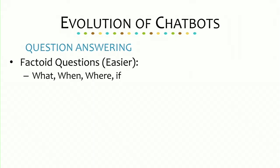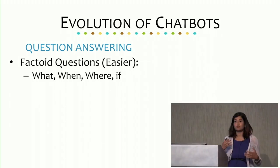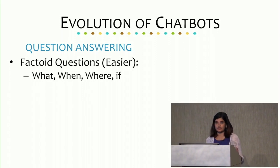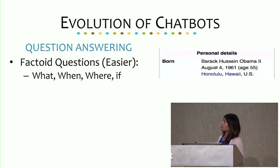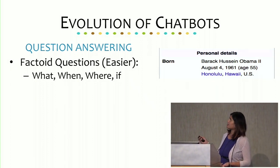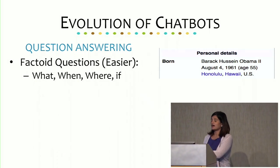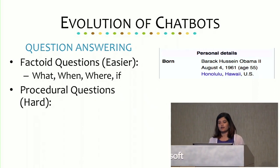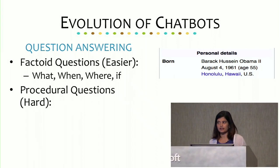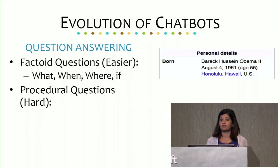Another piece of how chatbots came about is through question answering. There are easier factoid questions based on facts — questions like what, when, where, whose answers are objective and can be retrieved from things like Wikipedia pages. For example, where was Barack Obama born — you have this answer nicely placed in a table on the Wikipedia page. Then there are harder questions which we are still struggling with, and these are basically the questions that break the Turing test.